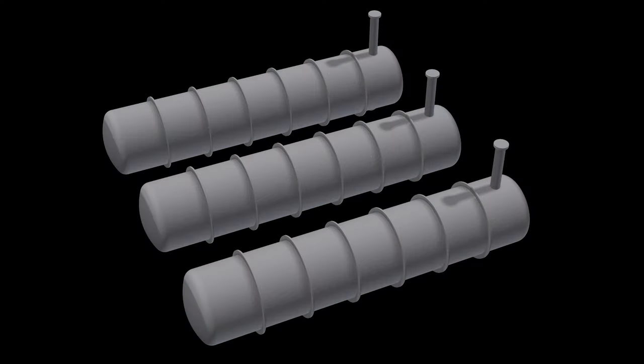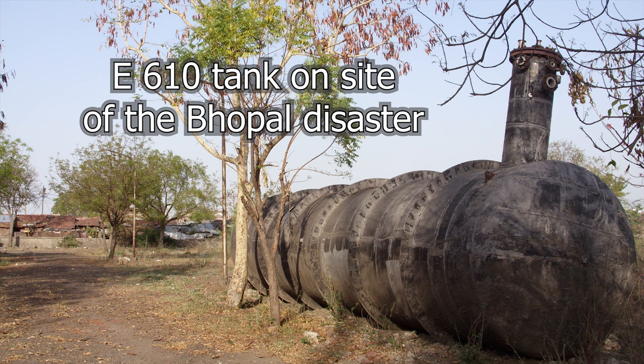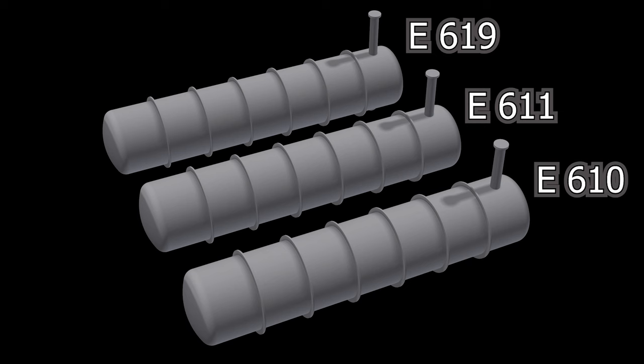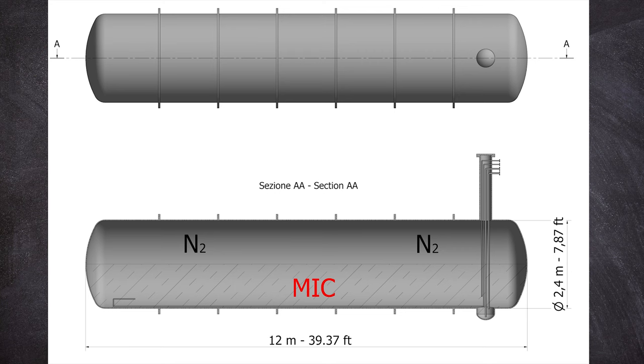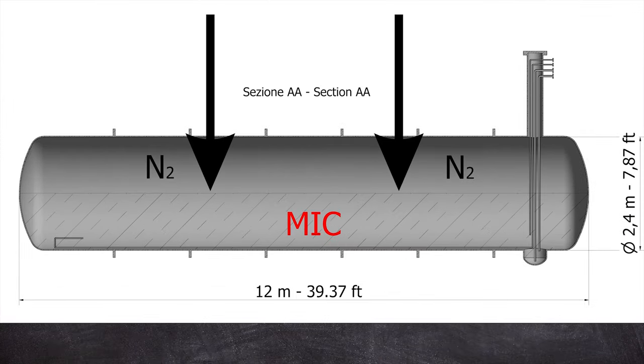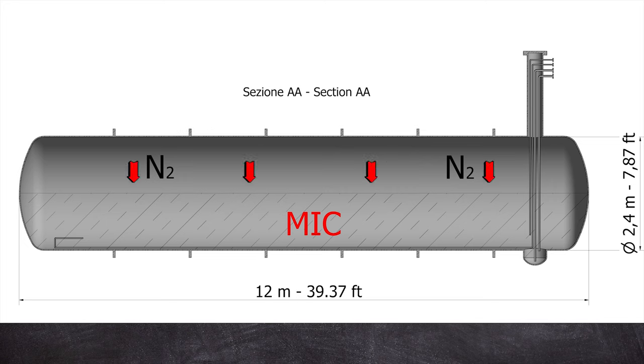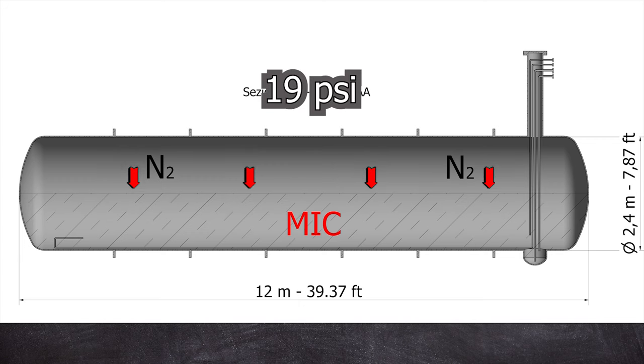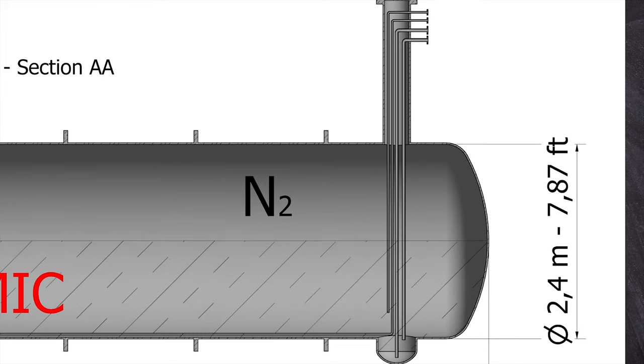The Bhopal plant housed three underground stainless steel liquid MIC storage tanks of 68,000 liters capacity: E-610, E-611, and E-619. No tank could be filled more than 50% of its capacity, and the tank was pressurized with gaseous nitrogen at a pressure of 19 psi. Pressurization allowed liquid MIC to be pumped out of each tank.